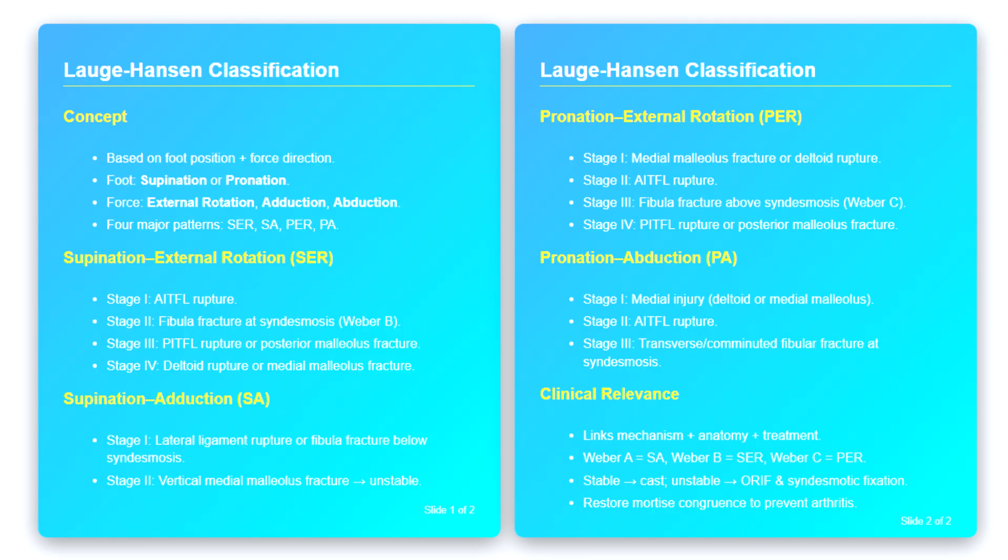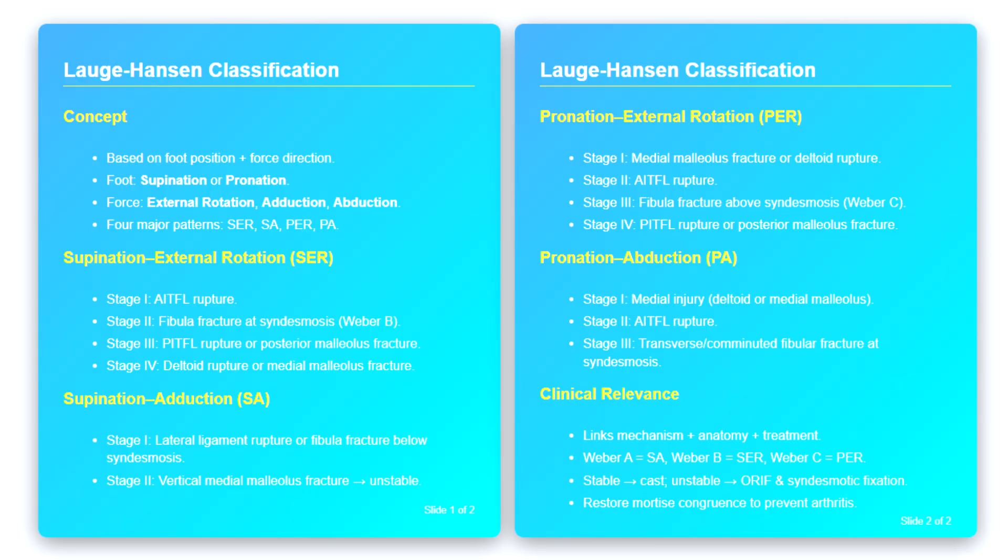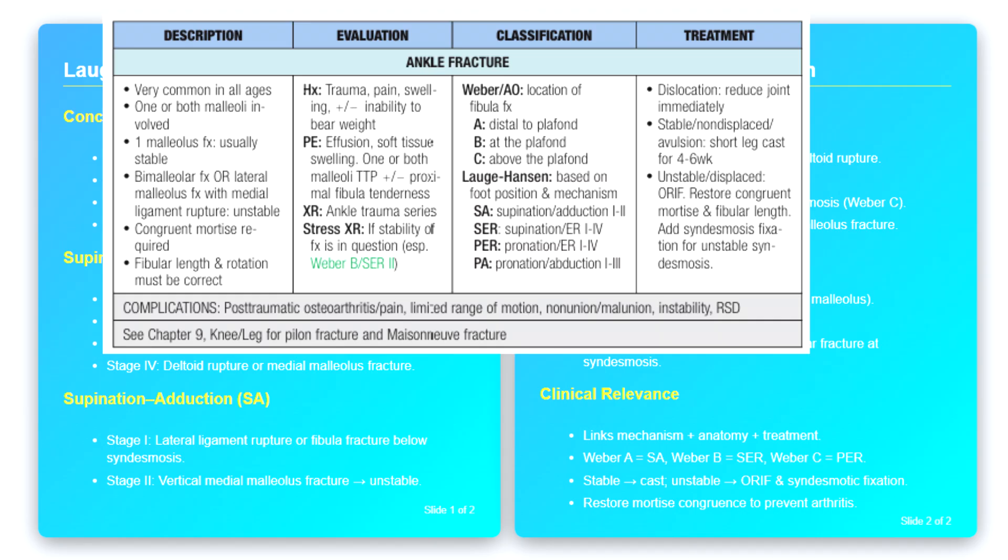Clinical Relevance. Now that we have reviewed these four mechanisms, let us consider their clinical relevance. First, Lauge Hansen helps us to predict associated injuries. For example, if we see a Weber C fibular fracture, we know it likely corresponds to a pronation external rotation injury, and therefore, we must carefully check the medial malleolus and posterior malleolus for associated damage.